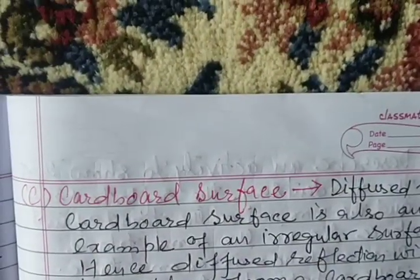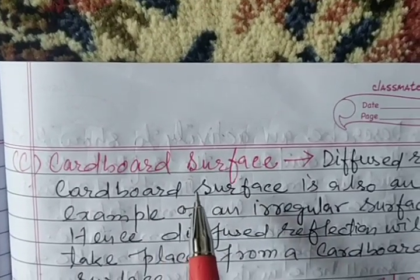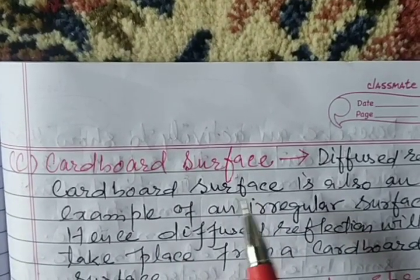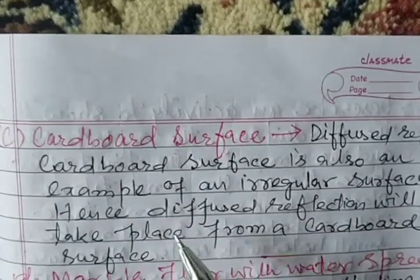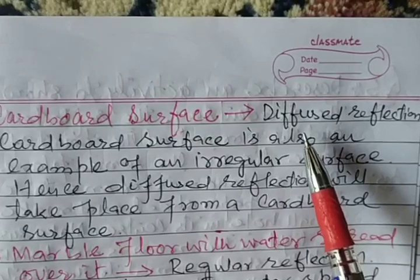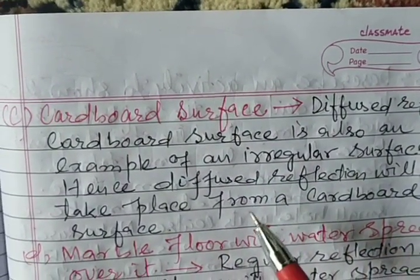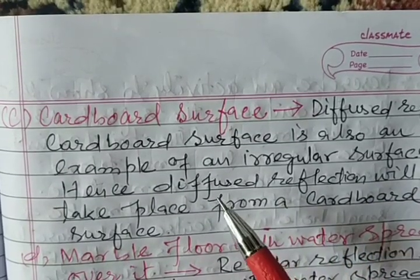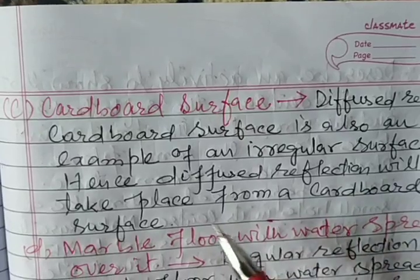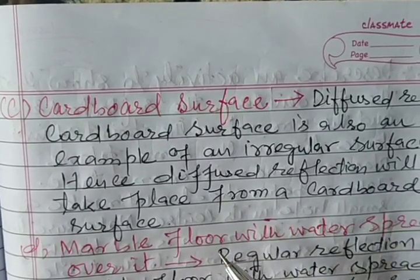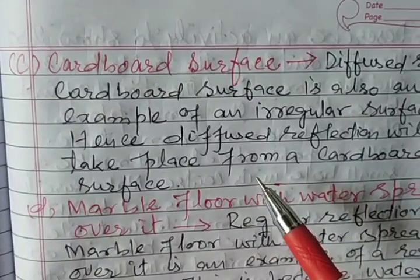Part C: Cardboard surface. A cardboard surface is also an example of an irregular surface. Therefore, diffused reflection will take place from the cardboard surface.